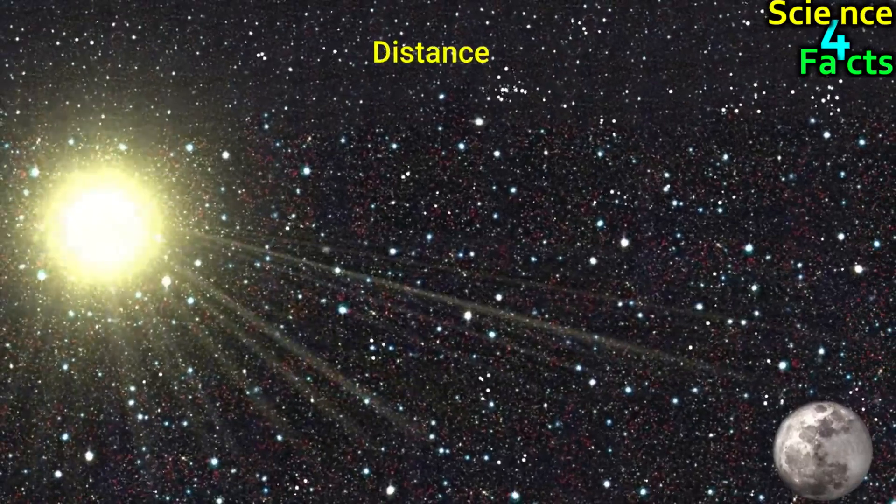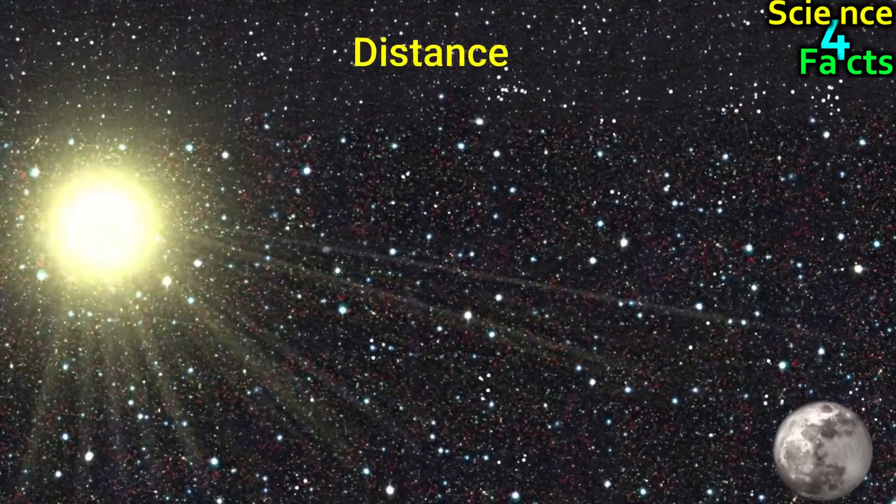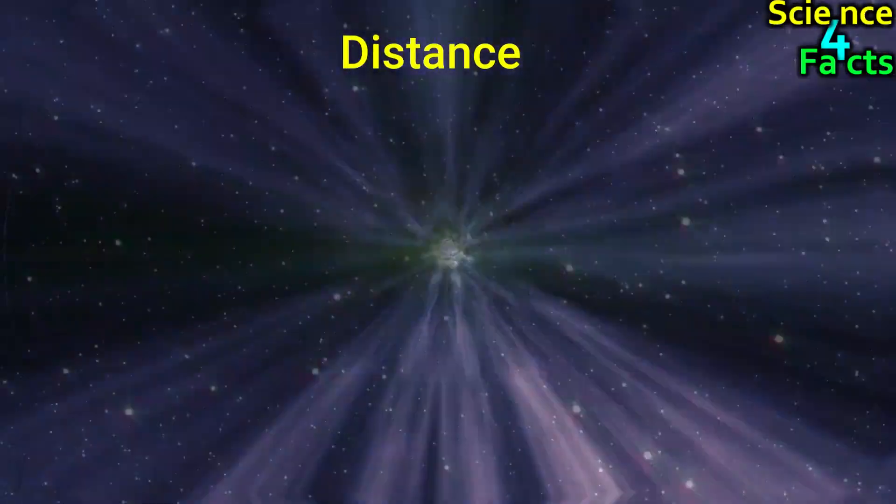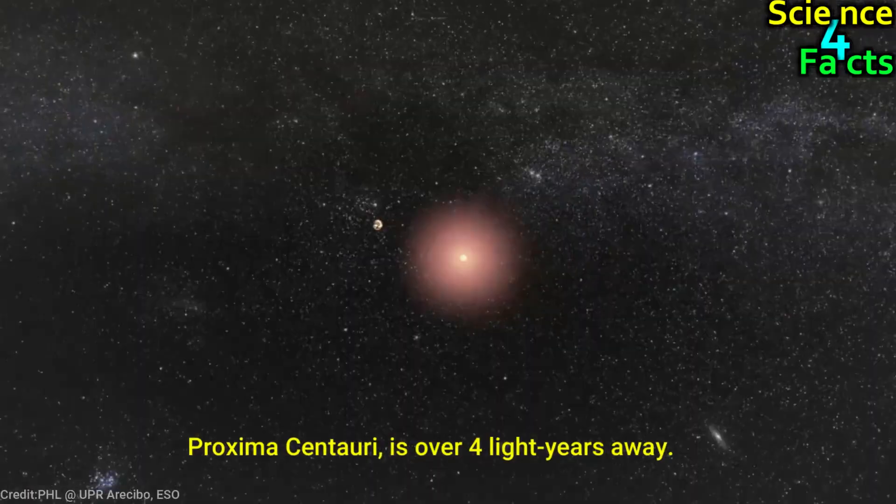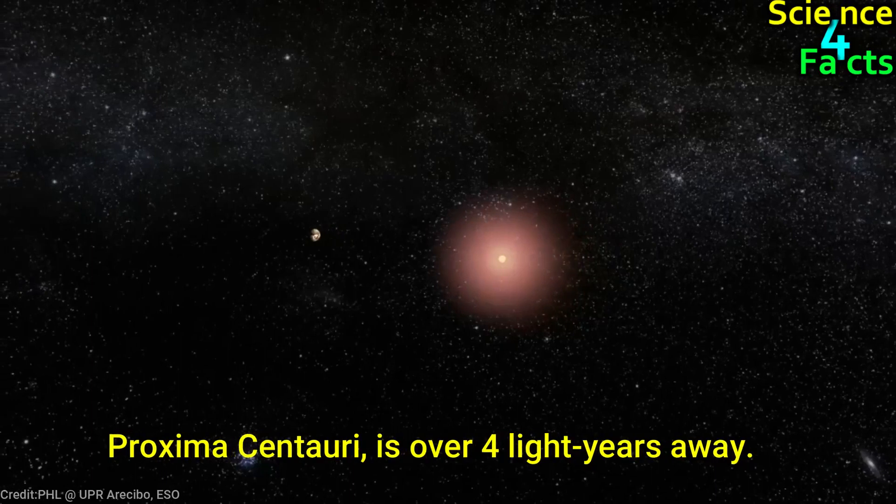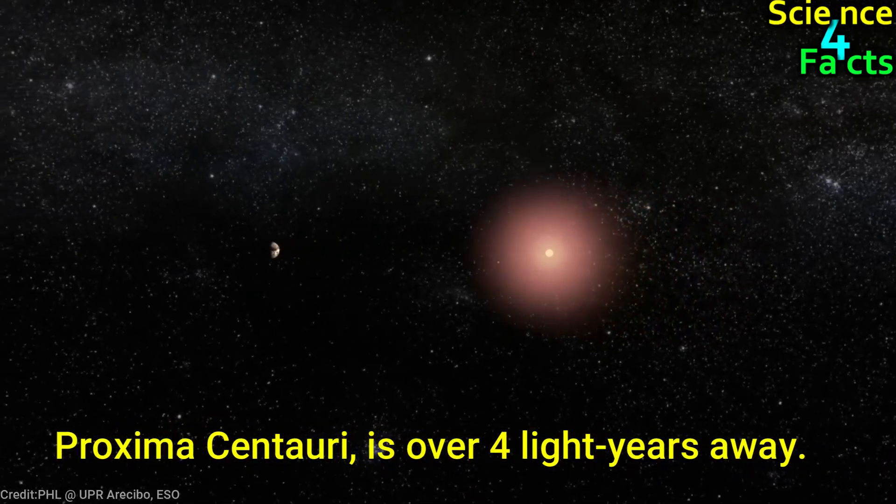One of the primary reasons why the night sky appears dark is distance. The stars in the universe are incredibly far away from us. Even the closest star, Proxima Centauri, is over four light years away.